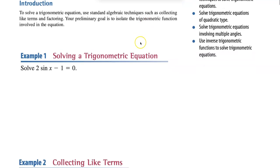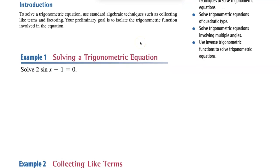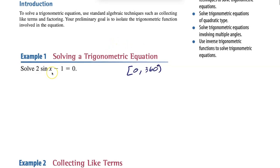Let's do this first one. Usually I give you a domain — we'll start with degrees, 0 to 360. We want to get sine by itself, so just like a normal algebraic problem, I'm going to add 1 to both sides. I get 2 sine of x equals 1, then divide by 2, and we get sine of x equals 1/2.